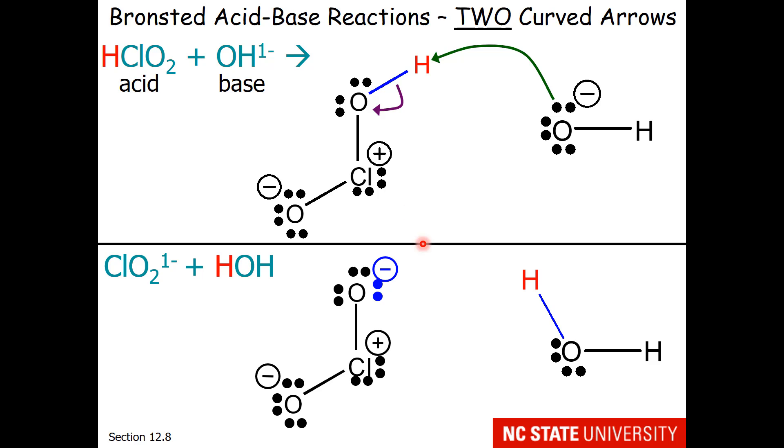So once this capture and release happens, what are we left with? You notice that the lone pair of the hydroxide has made a bond with hydrogen. So these two electrons have now become this bond. For the release arrow, the two electrons that were holding onto the hydrogen fall back to the oxygen and they become this lone pair. So now instead of our starting materials, you notice our ending materials are the chlorite ion, which we have the proper Lewis structure of, and water, which we also have the proper Lewis structure of.